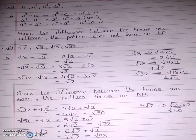To find the next three terms, add the common difference √2 to the last term √32 (which is 4√2): 4√2 + √2 = 5√2. To convert back, square the 5: 5² = 25, so 5√2 = √50. Next: √50 + √2 = 6√2, and 6√2 + √2 = 7√2.